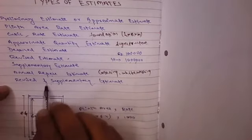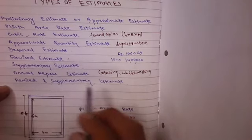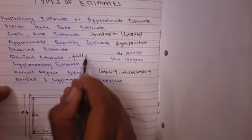As for revised and supplementary estimate, it is a combination of revised as well as supplementary estimate. The revised estimate is for full details.